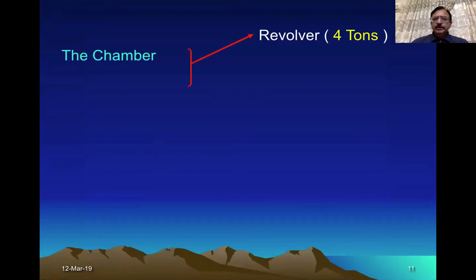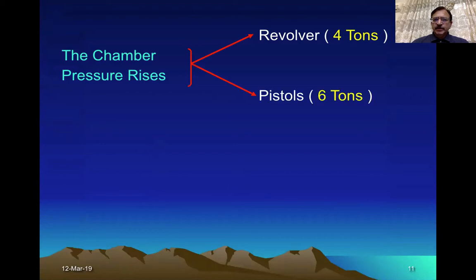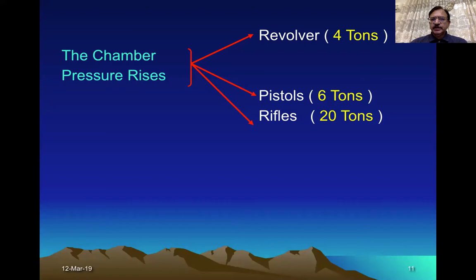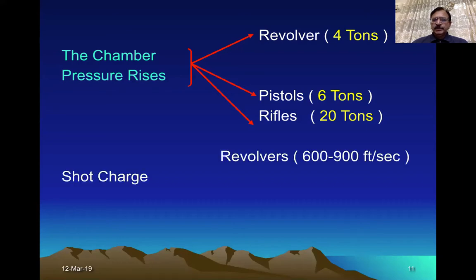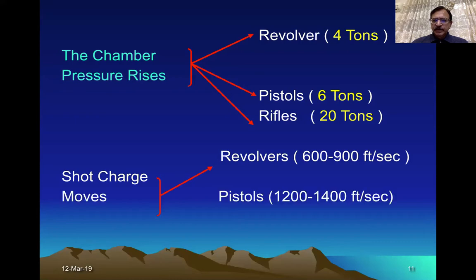This slide shows how much energy is produced within the chamber. The amount of pressure generated: in revolvers it is almost 4 tons, in pistols it is 6 tons, and in rifles it is 20 tons. This pressure causes exit of the bullet. The bullet then starts traveling — in revolvers at 600 to 900 feet per second, in pistols at 1,200 to 1,400 feet per second, and in rifles at 2,000 to 3,000 feet per second.